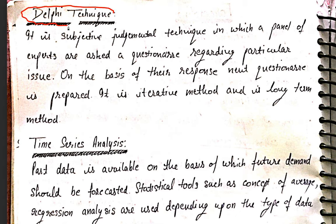The Delphi technique is a subjective judgmental technique in which a panel of experts are asked a questionnaire. We frame a series of questions, present them to the experts, and then based on their answers we prepare the next questionnaire. This is an iterative process — the experts are asked about a particular issue, and based on their responses the next questionnaire is prepared. It is also a long-term method.